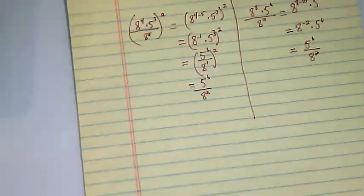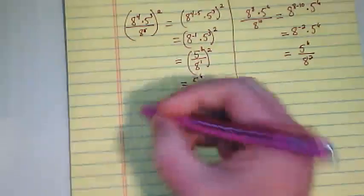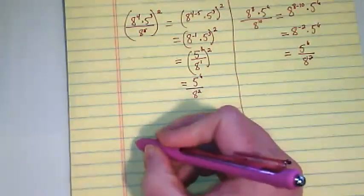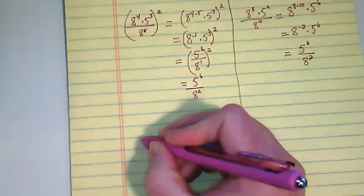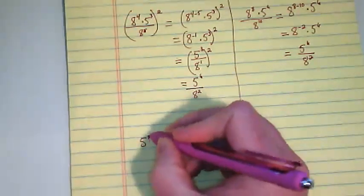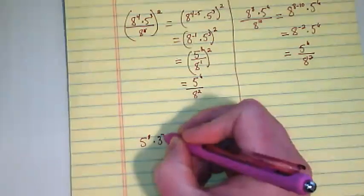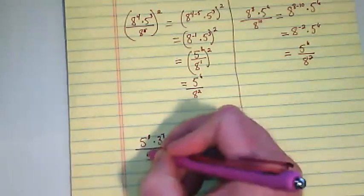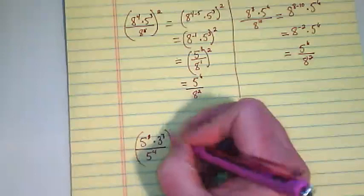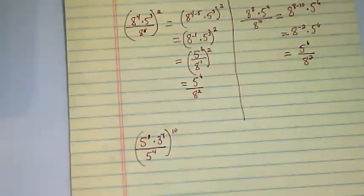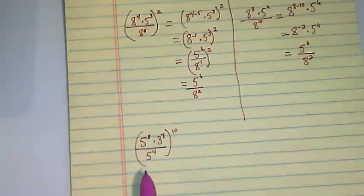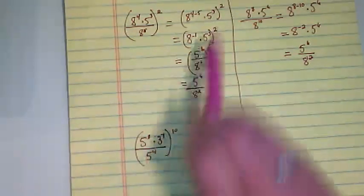The second problem that was asked to show the process is very similar. It's number nine on page four of that packet: five to the eighth times three to the seventh over five to the fourth, and that's all raised to the tenth power.